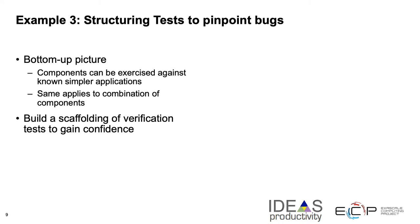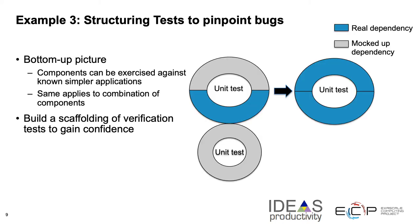In this third and final example we go to building scaffolding and structuring tests to pinpoint bugs. Starting from the bottom up, you can have components exercised against known simpler applications, and that applies to combinations of components also. Then you build a scaffolding of verification to gain confidence. In this picture, the gray circles are mocked-up dependencies, meaning you can run those tests without exercising any other component of the code. Whereas the blue components indicate that the test will not run meaningfully on its own, but if all of its dependencies have been verified, it will effectively verify that code.